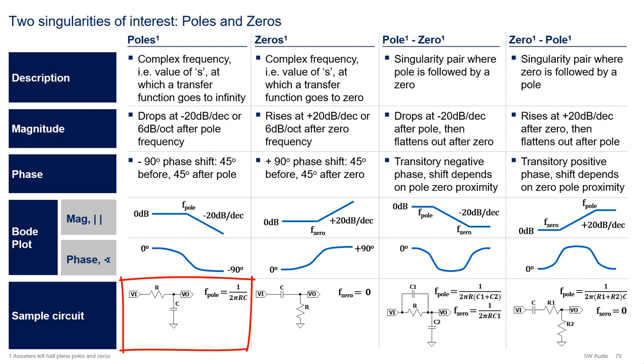At low frequencies, the capacitor is an open and the gain is 1. At the pole frequency, 1 over 2π RC, the capacitor starts shorting out the output to ground, and the gain magnitude drops. Remember, capacitor impedance goes down with frequency at -20 dB per decade.